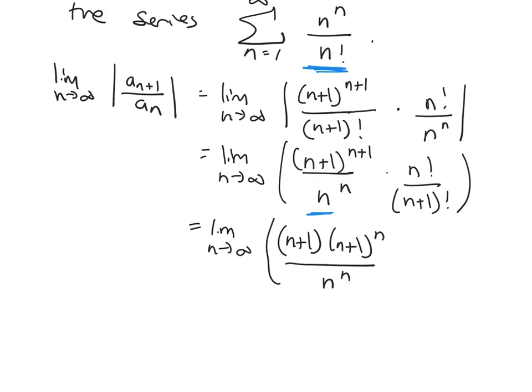So I'm going to write this as n plus 1 times n plus 1 to the n. And then for the factorials, I would like for them to be the same factorial. So in the bottom, I have the bigger one. n plus 1 factorial is bigger than n factorial. So in the bottom, you can write n plus 1 factorial. It's n plus 1 times n factorial.